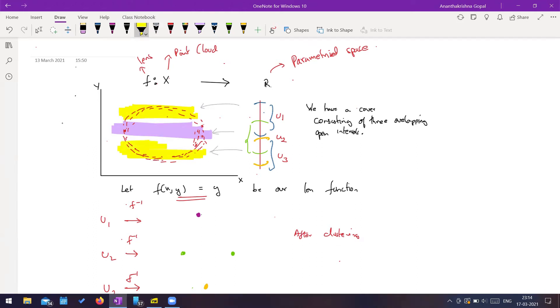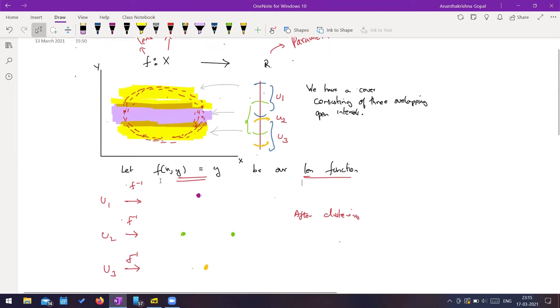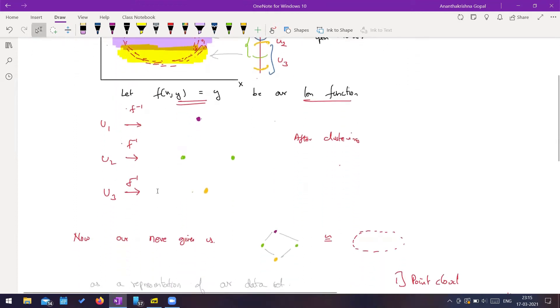And actually, if you notice, these things will sort of overlap. So I'll have an overlapping region over here. And then again, I will have another overlapping region over here. Okay, so that's good. So we have a lens, we have a cover. So next, we looked at the connected components also.